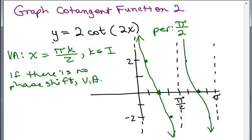The vertical asymptotes, basically you're going to do X equals the period times k. Put the period in here, period times k, and k is an element of the integers. So that might make it easier for the cotangent.